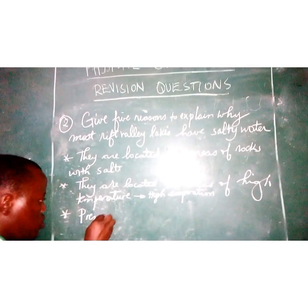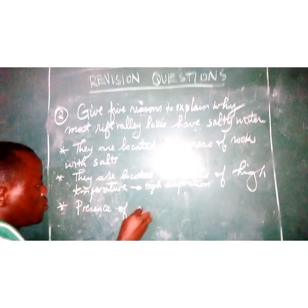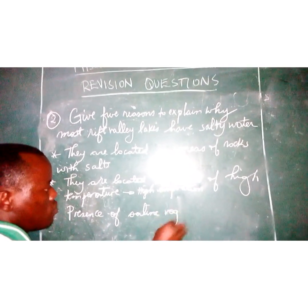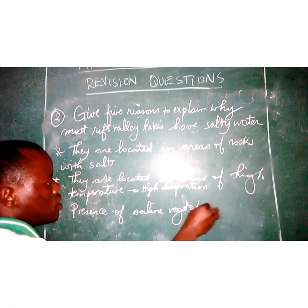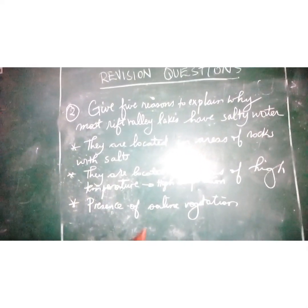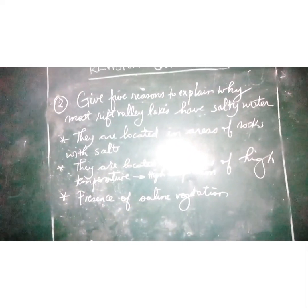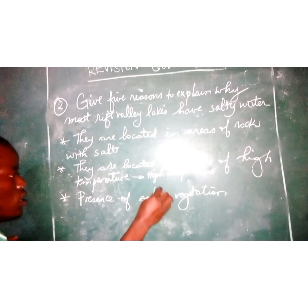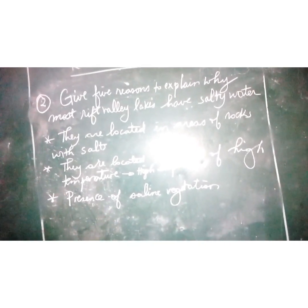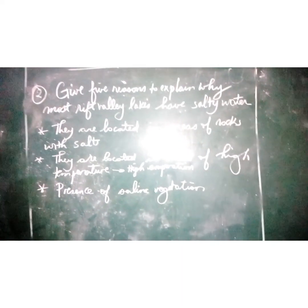Number three: presence of scarce vegetation. Most of the rift valley lakes are located in areas of scarce vegetation, and that scarce vegetation contains some kinds of salts, and those salts cause the water also to be salty.